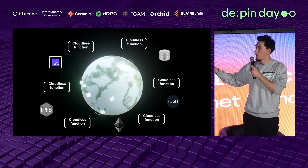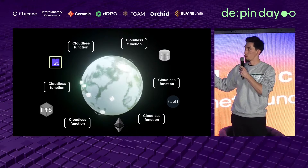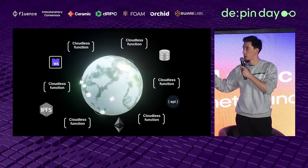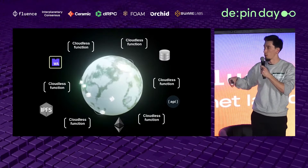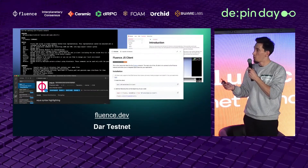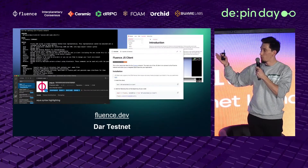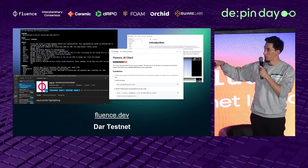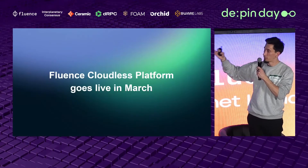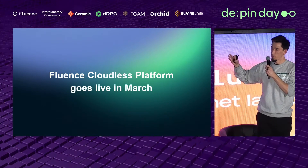In summary, there's a huge network of providers that run cloudless functions, connecting with a variety of storage systems, blockchains, and external services. They can run pure compute, all orchestrated by distributed cloudless functions. You can check it out at fluence.dev. Right now we're running on a testnet called Dar, and the cloudless platform goes live on mainnet in the next couple of weeks in March.